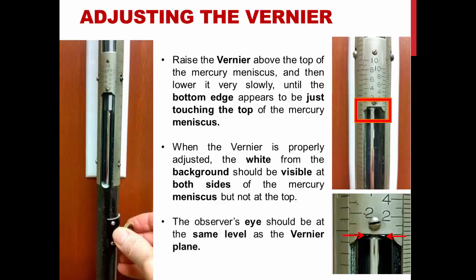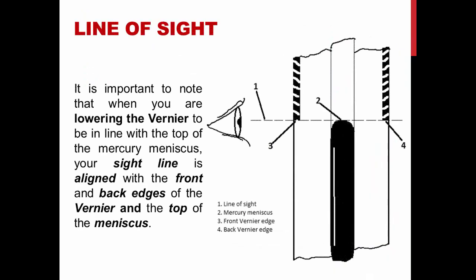When reading the vernier scale, be sure that your eye is at the same level as the vernier plane. It is important to note that when you are lowering the vernier to be in line with the top of the mercury meniscus, your sight line is aligned with the front and back edges of the vernier and the top of the meniscus.